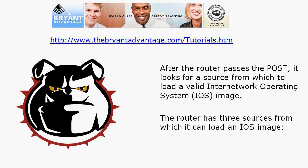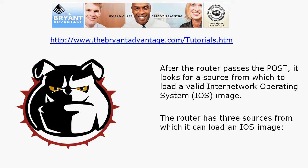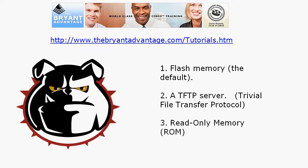Hopefully the router passes POST. The next thing that happens is it looks for a source from which to load a valid IOS image. The router has three sources, and this is the default order — which can be changed via the config register. The first place it looks for the IOS is Flash. That's the default. It can also find it on a TFTP server (Trivial File Transfer Protocol) or in ROM (Read-Only Memory).